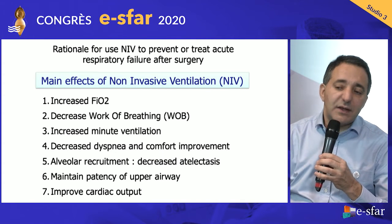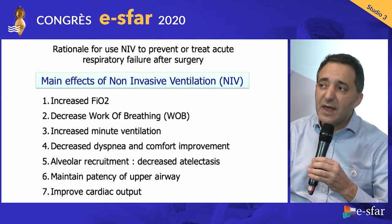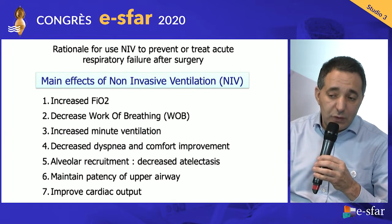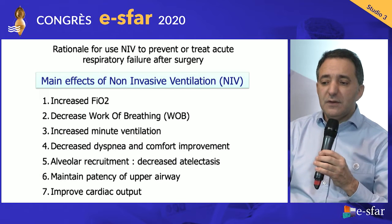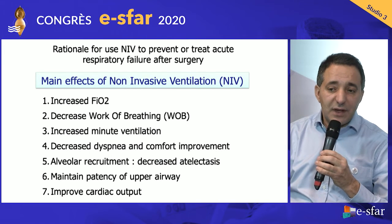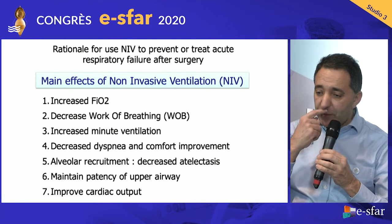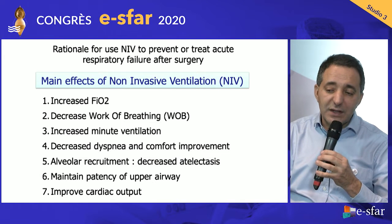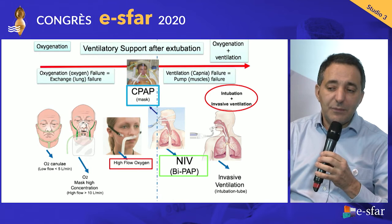The main mechanisms can be summarized in seven points. Using noninvasive ventilatory support, you can probably increase FiO2, decrease respiratory effort and work of breathing, increase minute ventilation as the machine acts as an accessory muscle, decrease dyspnea, and improve comfort. All this leads to alveolar recruitment or prevents atelectasis formation. I also strongly speculate that it maintains the patency of the upper airway in selected patients, and improves cardiac output in some patients after surgery with fluid overload.